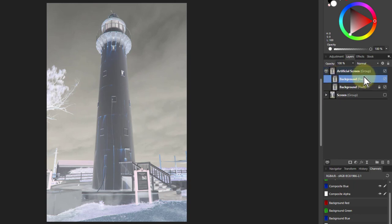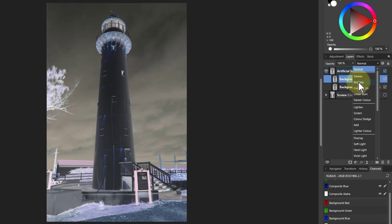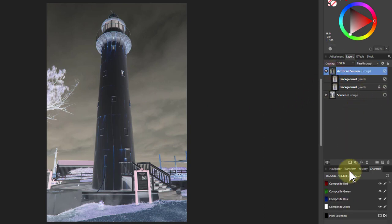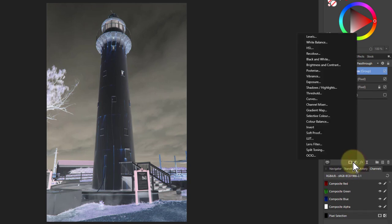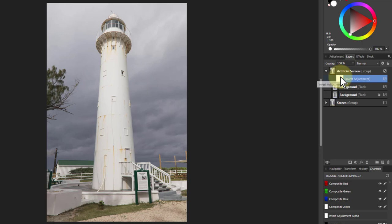And then we want to multiply them together. So I go to here and to multiply, and there you go. So it's got darker. And then we want to invert that again. To do that we go to the group and to the invert here, so we're adding invert overall. And there we go. We've got ourselves an artificial screen blend mode.